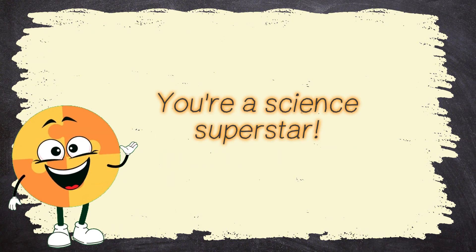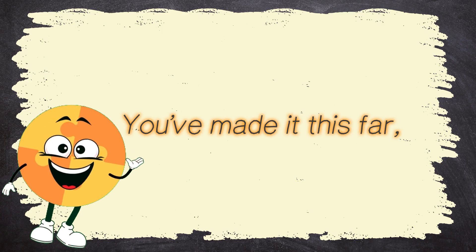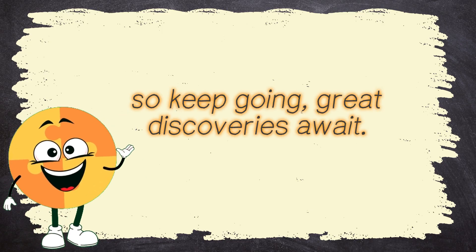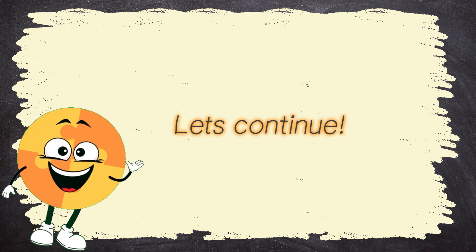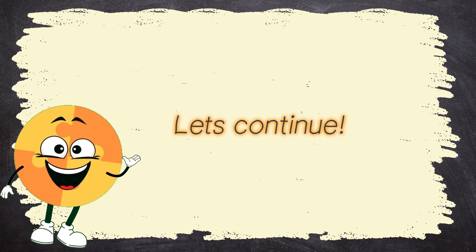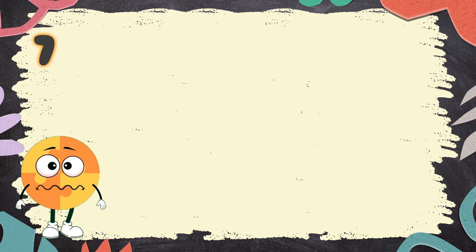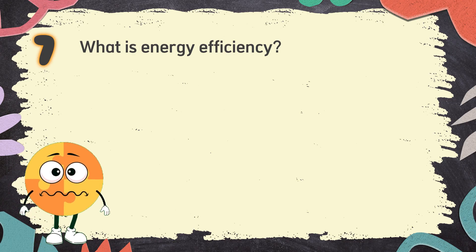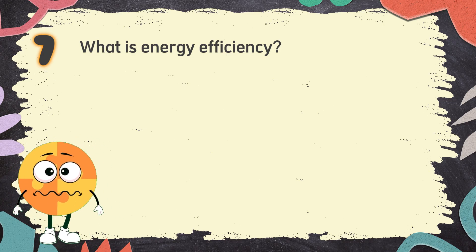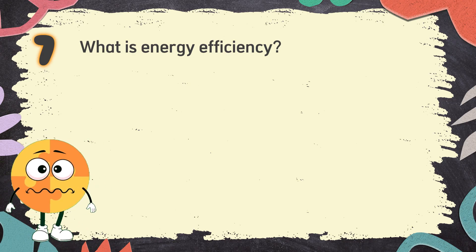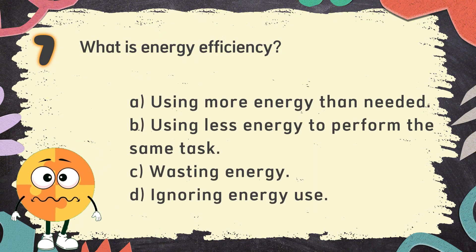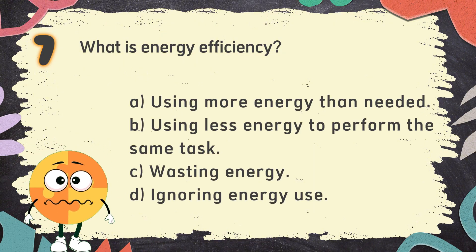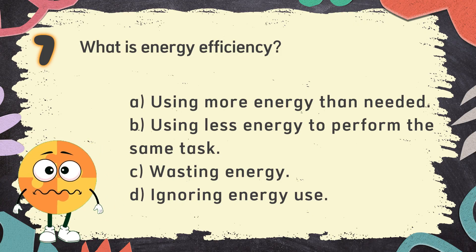You're a science superstar! You've made it this far, so keep going — great discoveries await! Let's continue. Number 7: What is energy efficiency? The choices are: A. Using more energy than needed, B. Using less energy to perform the same task.